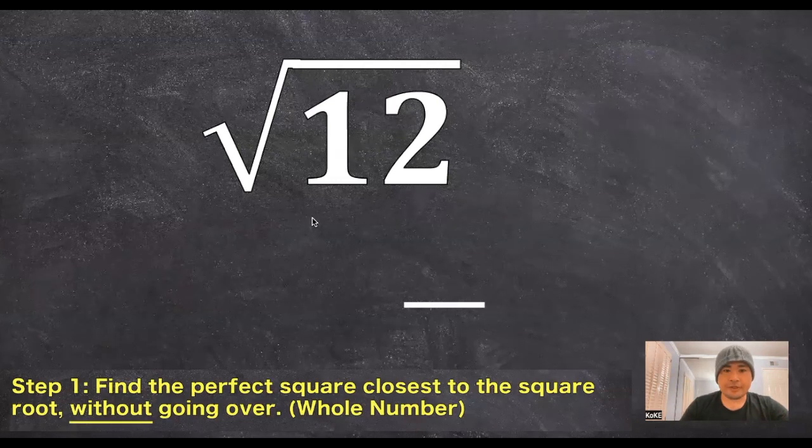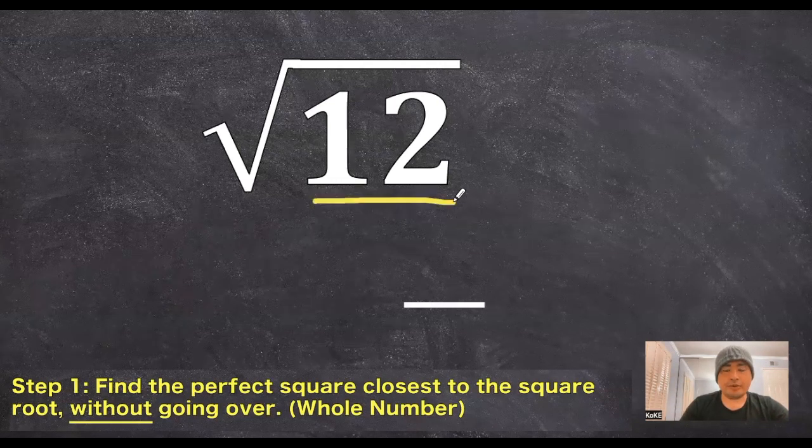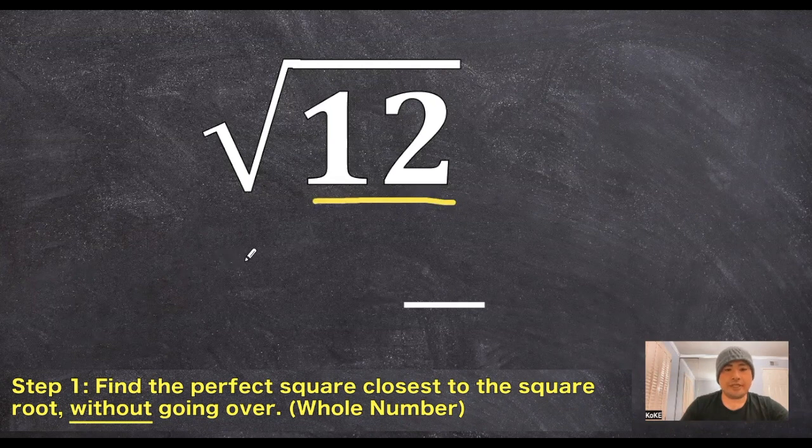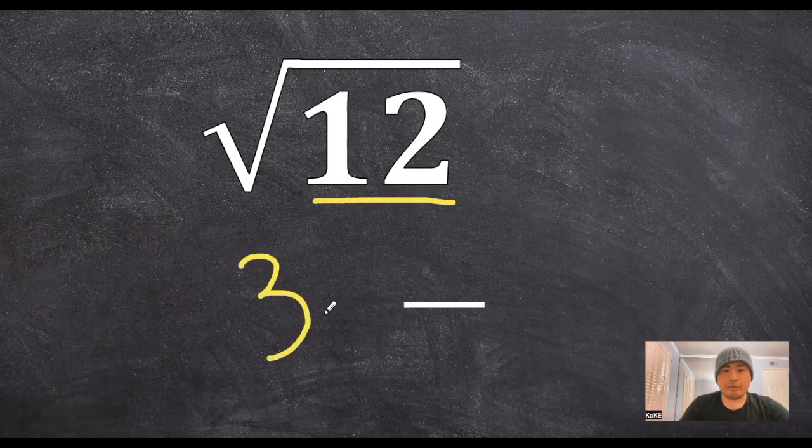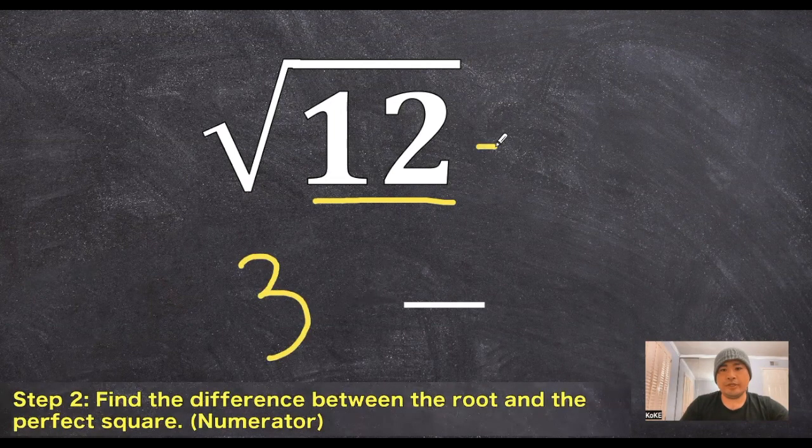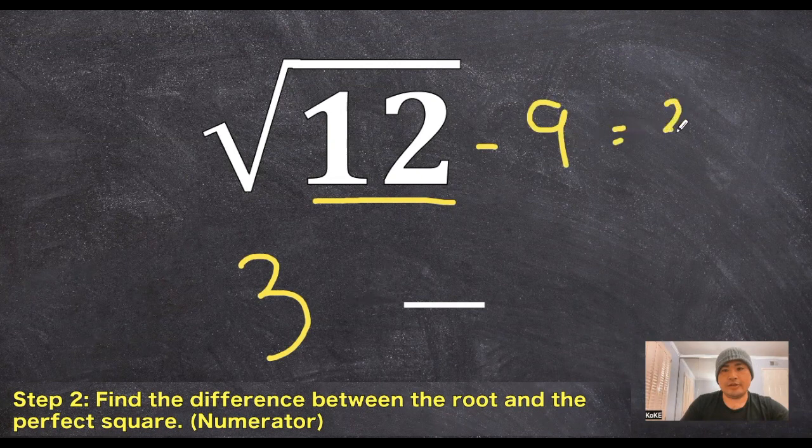So step one is to find a perfect square that is closest to this number without going over. So in this case, it would be 3. And then 3 squared would be 9. So step two is to find the difference between the two numbers. In this case, our difference is 3.